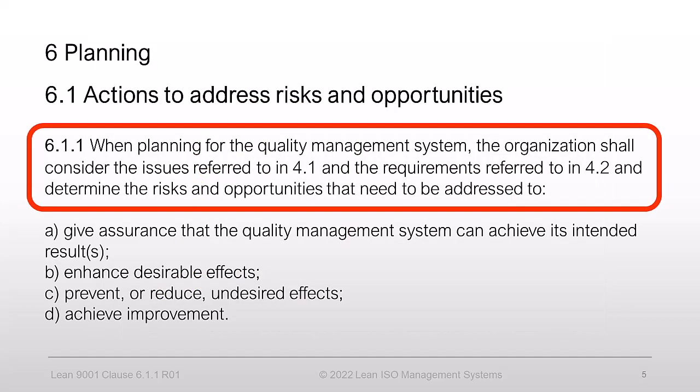Element 6.1.1 requires that when planning for the QMS, the organization shall consider the issues referred to in 4.1 — the context — and the requirements of 4.2 — interested parties. The clause also requires the determination of risks and opportunities that we have to address.